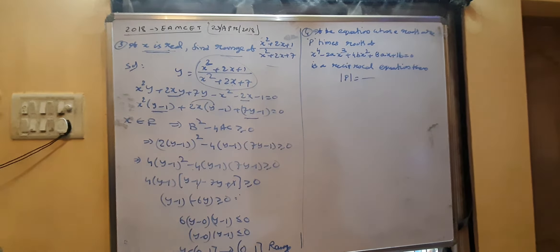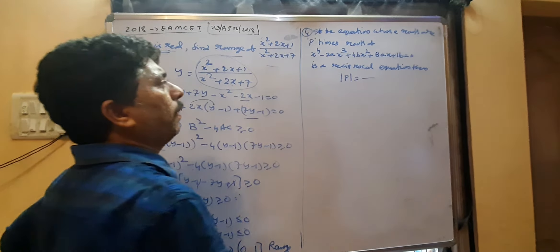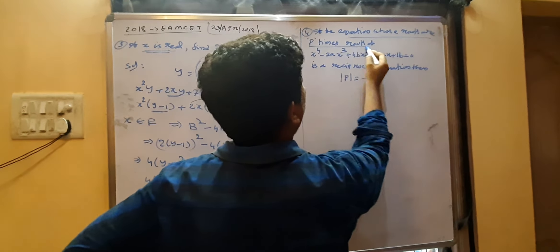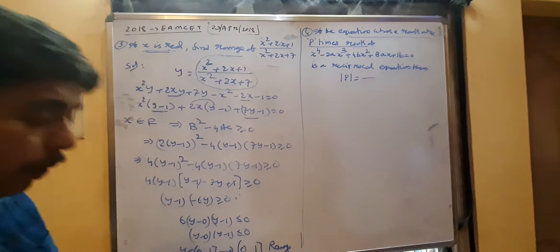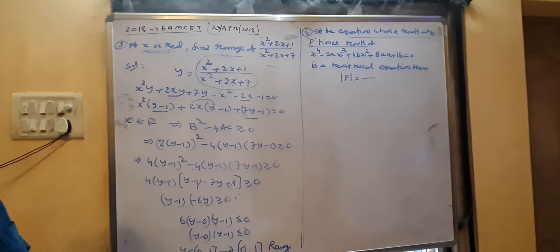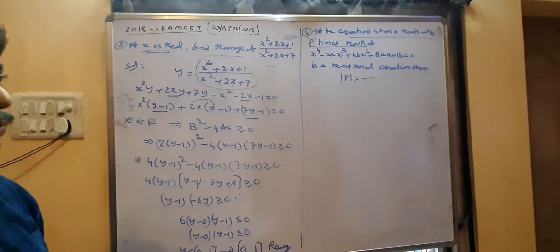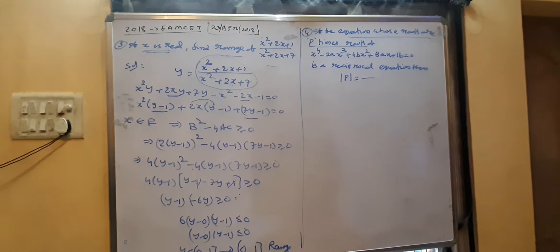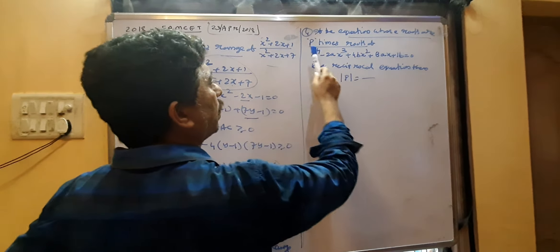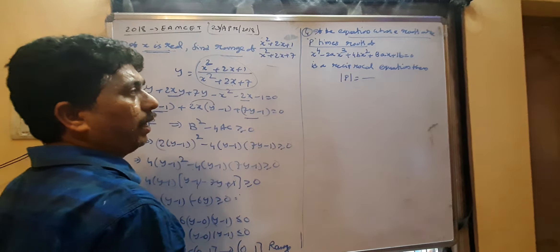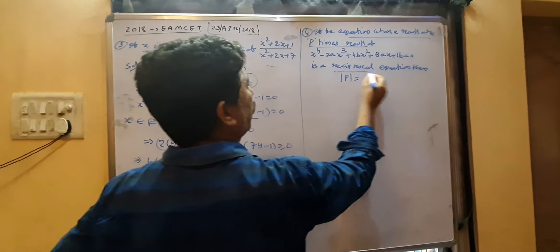Next question: find the equation whose roots are p times the roots of the given equation. P times roots means replace x by x/p in the given equation. The resulting equation is given to be a reciprocal equation.